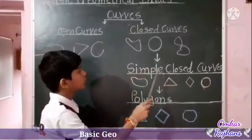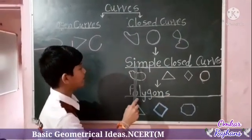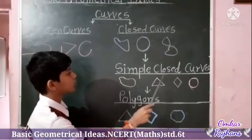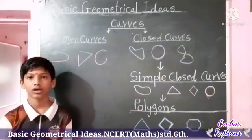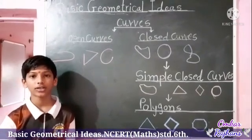Close Curves have two types: Simple Close Curves and Polygons. Simple Close Curves are closed curves that do not cross themselves.